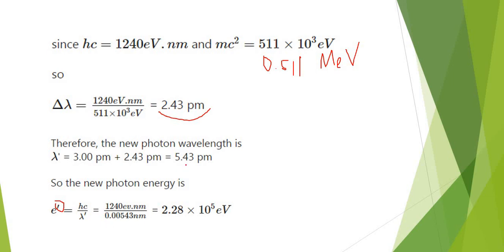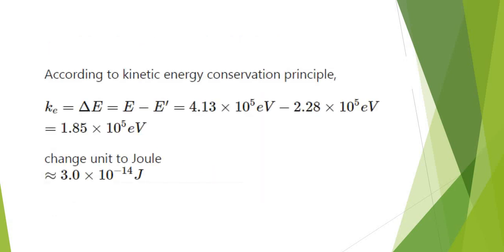The value you got here, come up with the answer 2.28 times 10 to the power of 5 electron volts. Okay, back to the question. It wants us to find the kinetic energy.